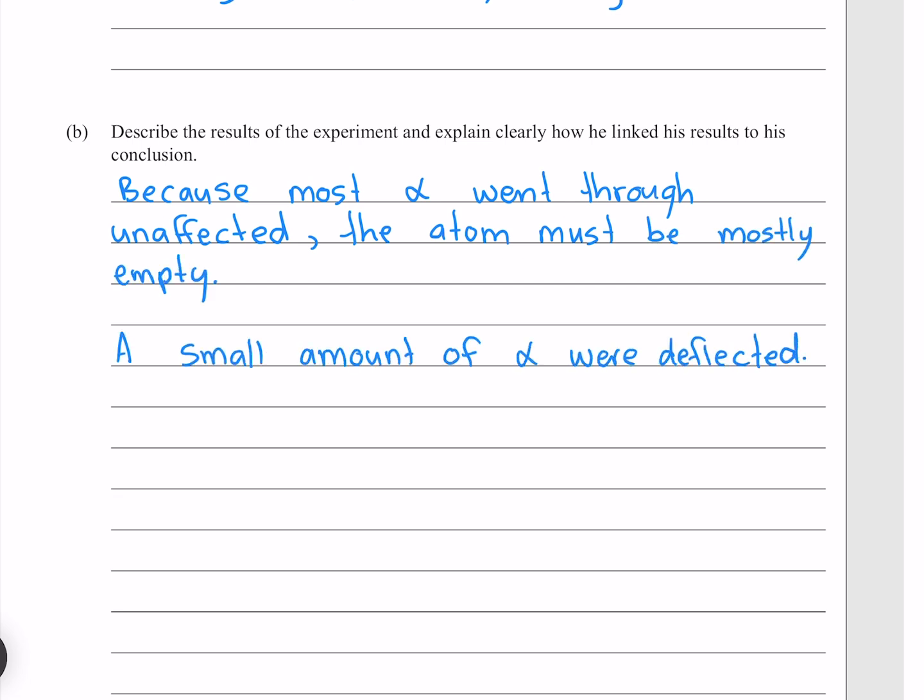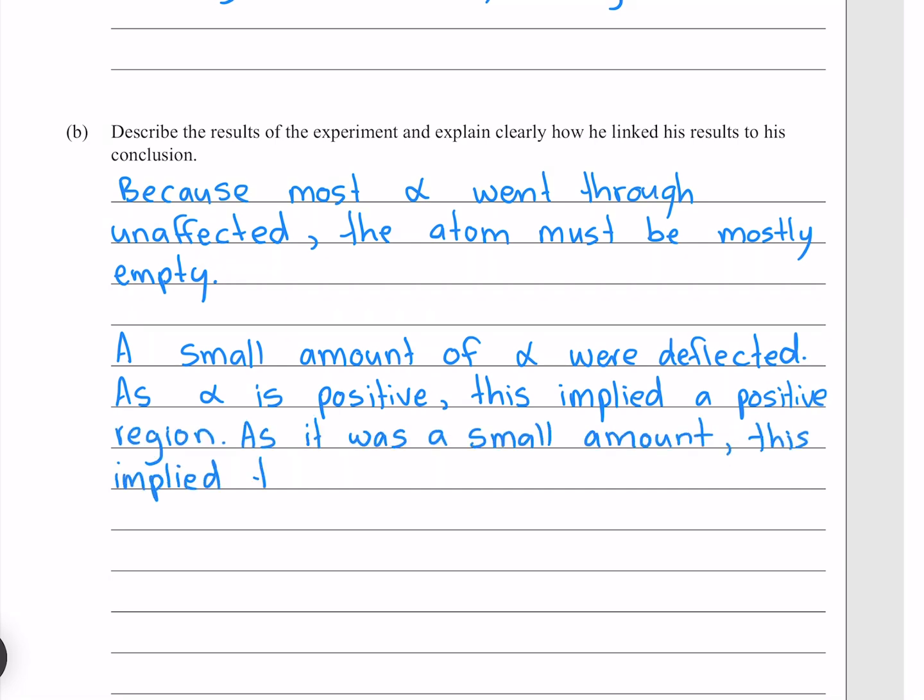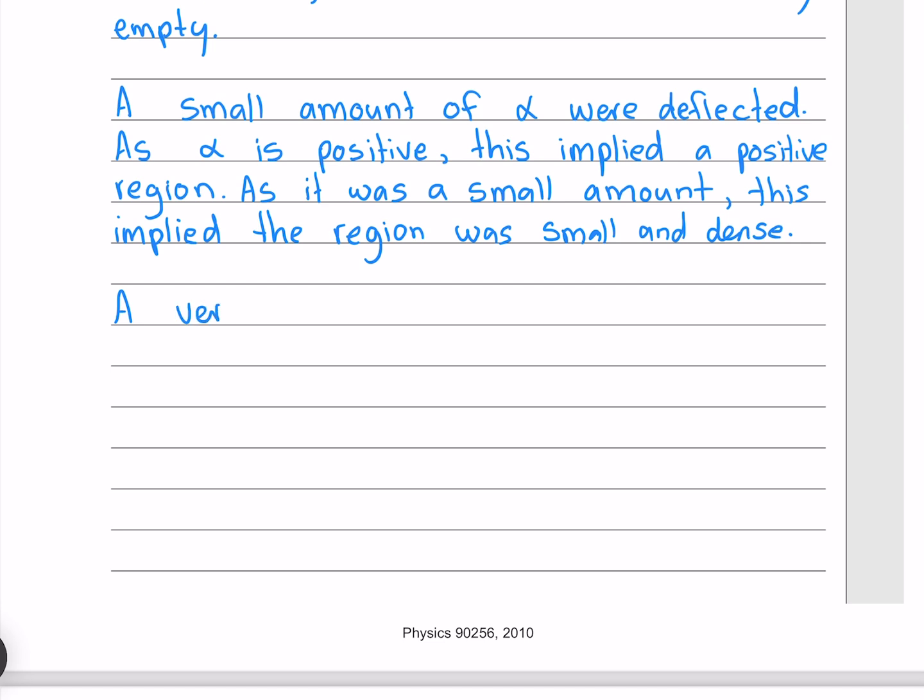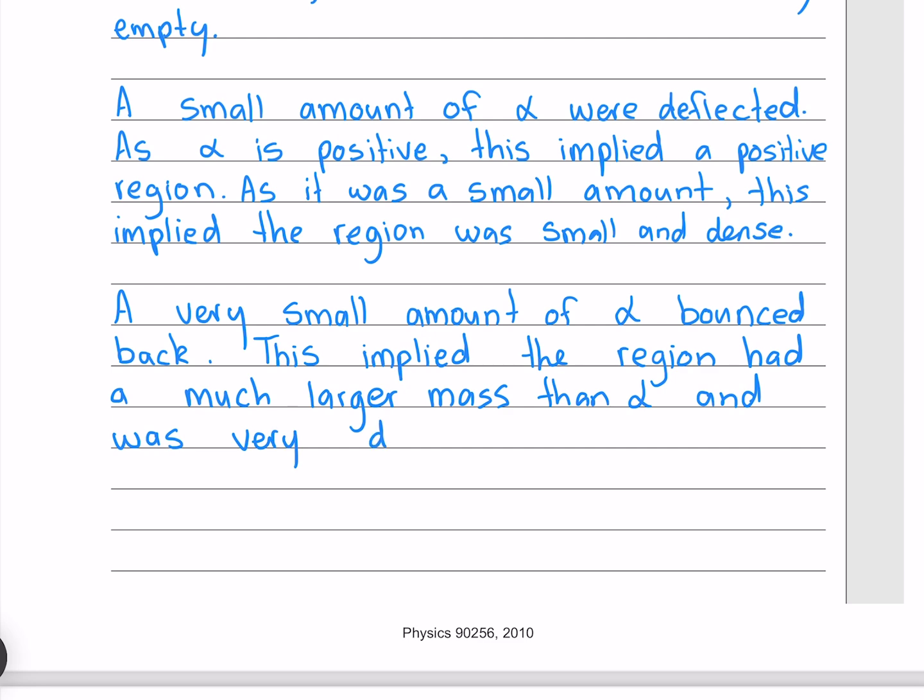A small amount of alpha were deflected. As alpha is positive, this implied a positive region. As it was a small amount, this implied the region was small and dense. A very small amount of alpha bounced back. This implied the region had a much larger mass than alpha, and was very dense.